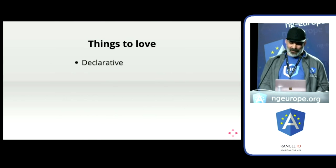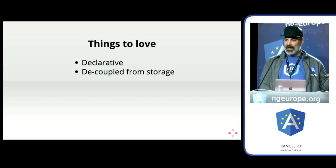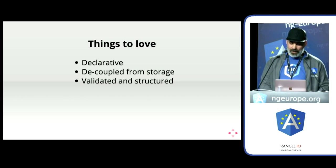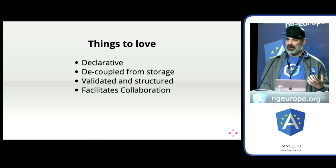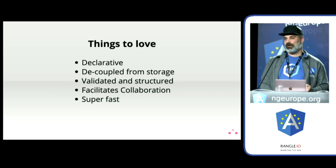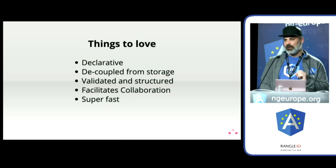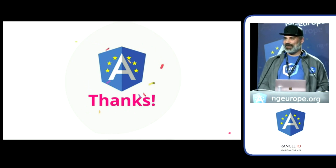Things to love about GraphQL: it's declarative, decoupled from storage — we can build our clients independently — it's validated and structured, and the main thing is the GraphQL schema. It facilitates collaboration, which helps if you're working in large teams like they do at Facebook. And the last thing is that it's super fast — it can do multiple queries, make one request, and get all the data you need. That's all I've got, I hope you enjoyed it, thank you.